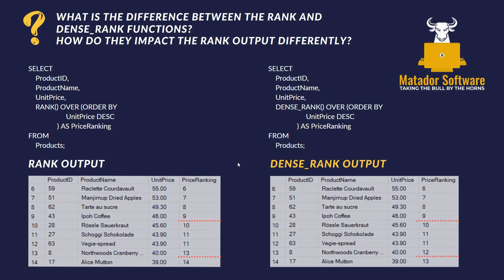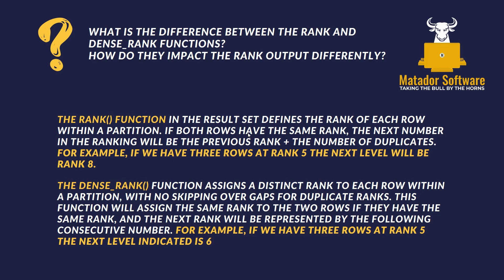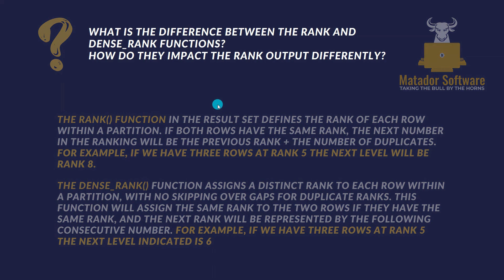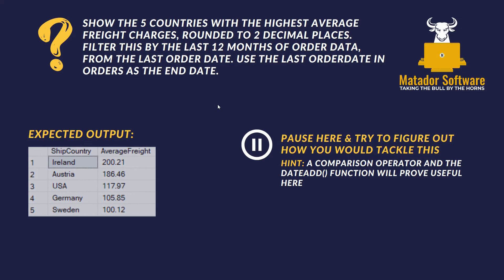As you can see in the bottom left image, the price ranking goes 10, 11, 11, 13, and the dense rank in the bottom right goes 10, 11, 11, 12. The RANK function defines the rank of each row within a partition. If both rows have the same rank, the next number is the previous rank plus the number of duplicates — so if three rows are at rank five, the next is eight, as we saw with 11, 11, 13. In DENSE_RANK, we don't skip gaps for duplicate ranks — it assigns the same rank to tied rows, and the next rank is the following consecutive number. So if three rows are at rank five, the next is still six.